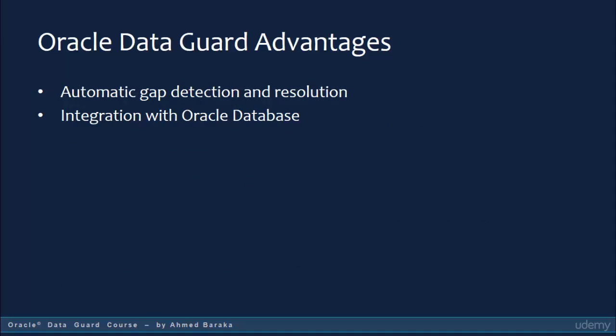Oracle DataGuard also provides automatic gap detection and resolution. When the connection between the primary and standby database is lost, a replication gap will occur. When the connection comes back, Oracle DataGuard will automatically detect and fill this gap. As a DBA, you don't need to manually resolve the gap.